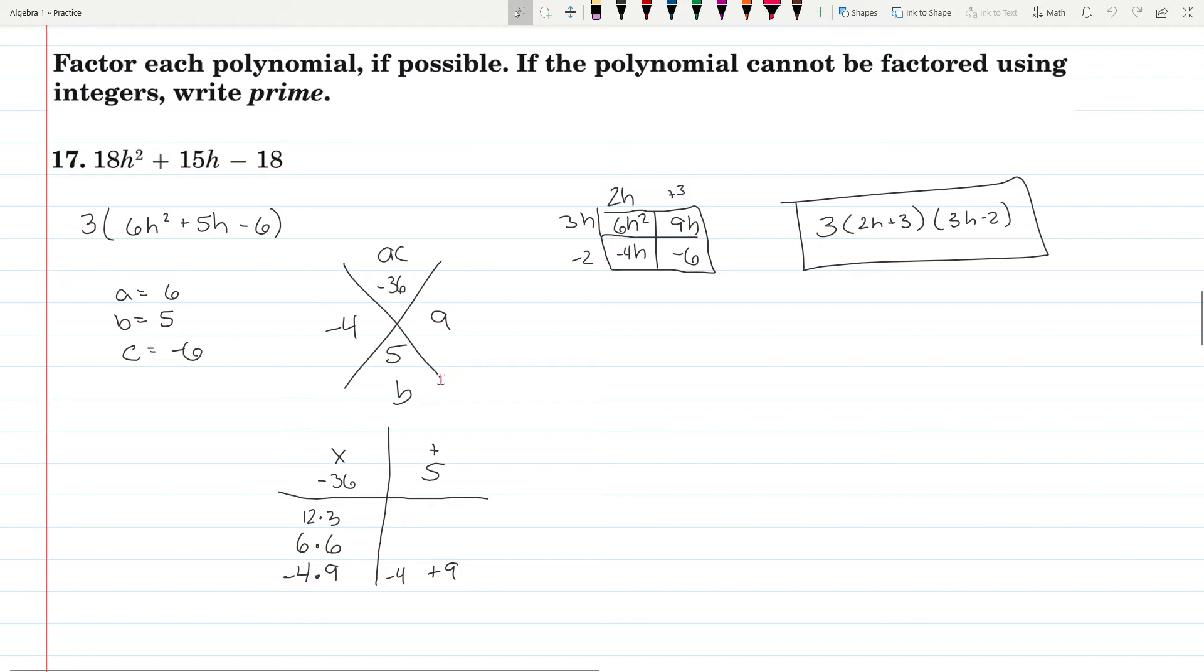As I'm going through this, it's one of those products of negative 36 that add up to 5. Sometimes you have to list multiple things out. We know 12 times 3 is 36, but you can't manipulate those to get to 5. 6 times 6 is 36, but you can't manipulate those to get to 5. Oh, 4 and 9. 4 times 9 is 36. I need to get this to be a positive 5, so the 9 needs to be positive. So negative 4 times 9 or negative 4 plus 9.